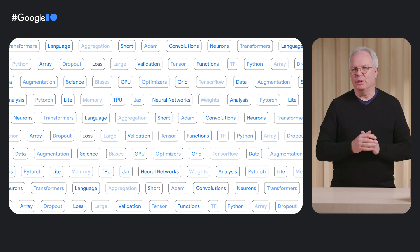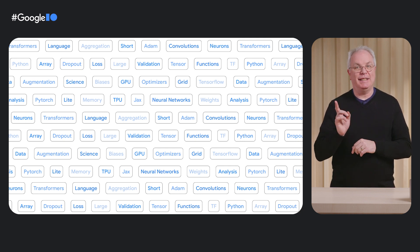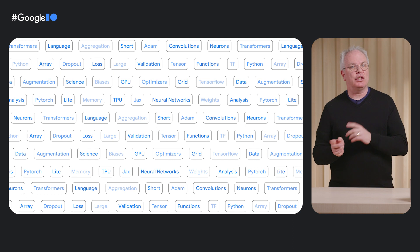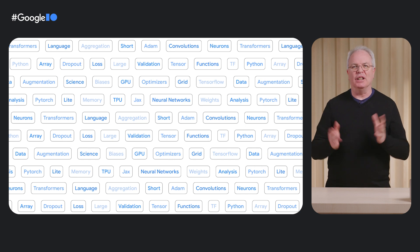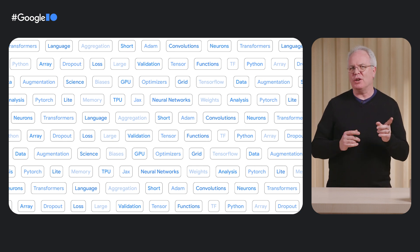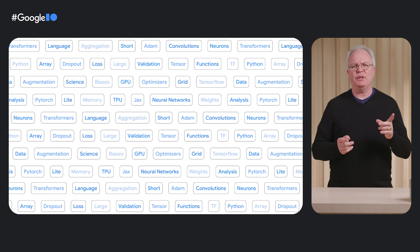Neural networks, convolutions, large language models, long short-term memory, data, data science, augmentation, aggregation, optimizers, loss functions, cost analysis, validation, transformers. What are all these things and where do I start?